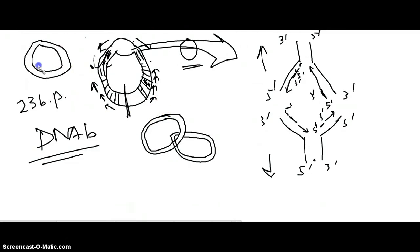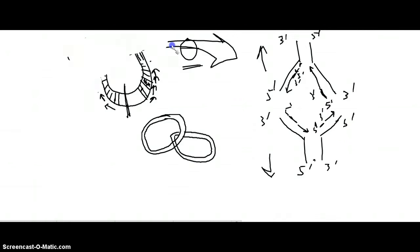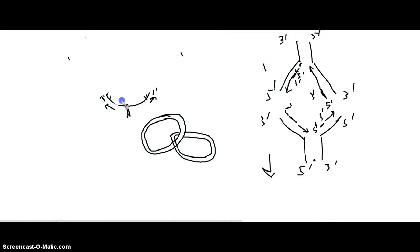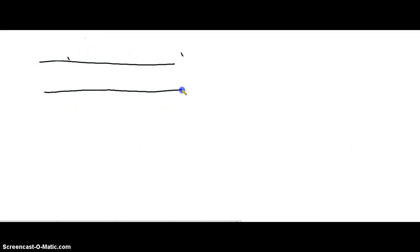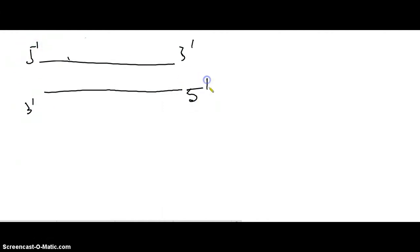Now let's look at the eukaryotic termination process of replication, which is very interesting. The eukaryotic DNA is not circular but is a linear DNA molecule. On the linear strand, there is a 5' end and a 3' end on each strand. While synthesizing the leading strand, you place an RNA molecule at the beginning and it synthesizes as a continuous strand in the five prime to three prime direction.